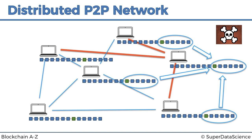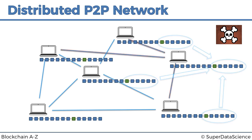That's the beauty of distributed peer-to-peer networks in blockchain, and that adds an extra level of security. We had hash cryptography as one level of security, and now we've got peer-to-peer networks as another level. As we'll see through the consensus protocol and other mechanisms, there are more and more layers of security that make blockchain so powerful.